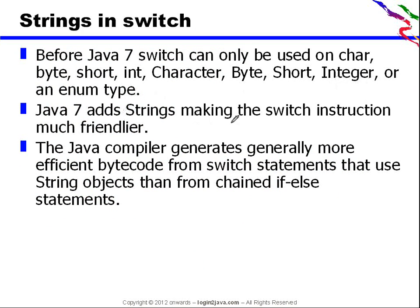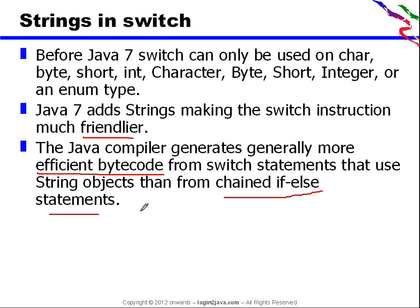Java 7 adds strings, making the switch instruction much friendlier. The Java compiler generates generally more efficient byte code from switch statements that use string objects, compared to the chained if-else statements you might be using in earlier versions.